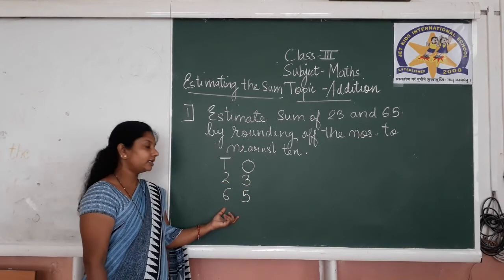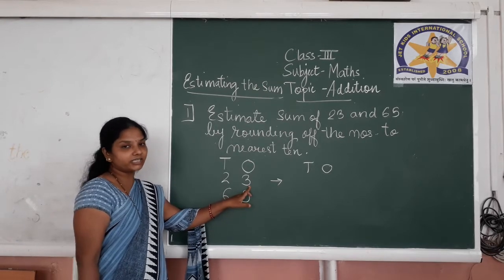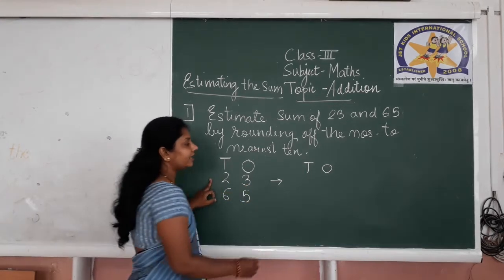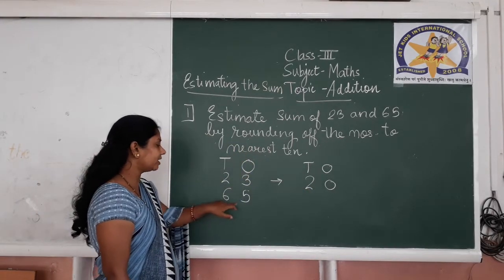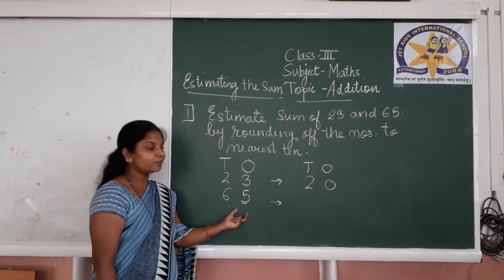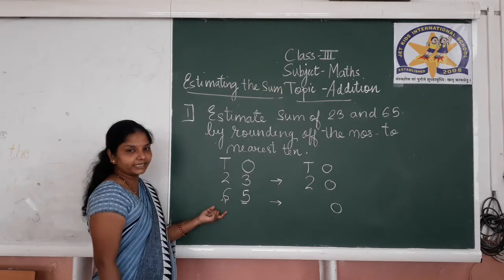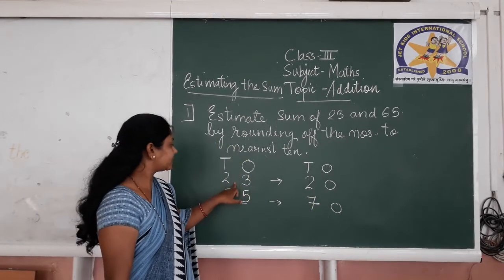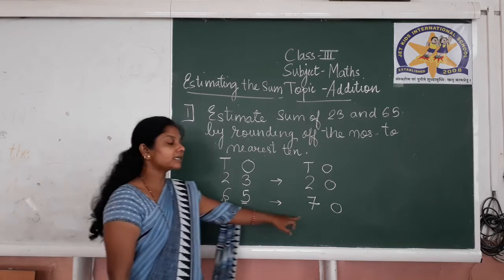We are going to round off 23 and 65 to the nearest 10 and then add the numbers. For 23: it is nearest 10, so check the digit at 1's place — it is 3, which is in Group 1. Write down 0 at its place and keep the remaining digit as it is, so 23 rounds to 20. For 65: check the digit at 1's place — it is 5, which is in Group 2. Write down 0 and add 1 to the 10's digit: 6 plus 1 is 7, so 65 rounds to 70.